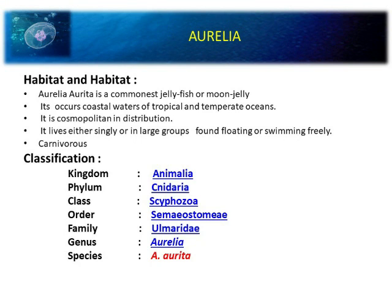Aurelia occurs mainly in coastal waters of tropical and temperate regions. It is cosmopolitan in distribution. They live singly or in large groups. They are found floating or swimming freely.